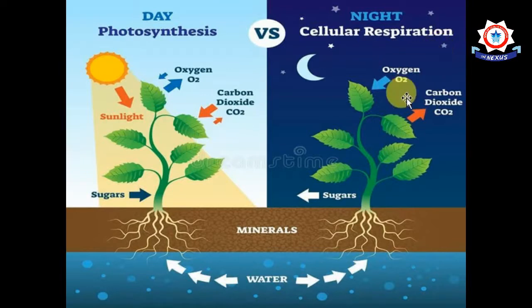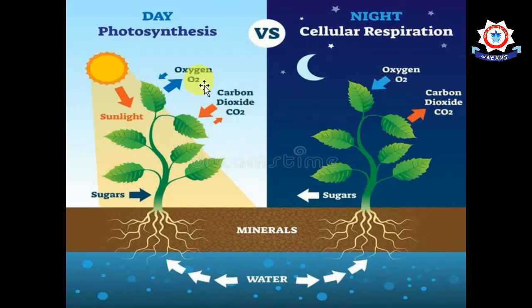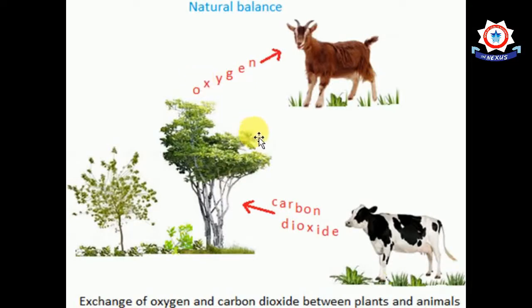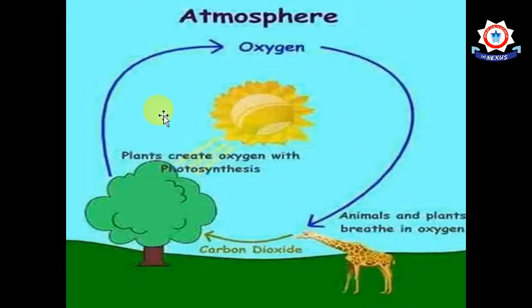During respiration, plants give out carbon dioxide and take in oxygen. Overall, plants take in carbon dioxide and give out oxygen, while animals take in oxygen and give out carbon dioxide. Between them, they keep the gases in the atmosphere in balance.